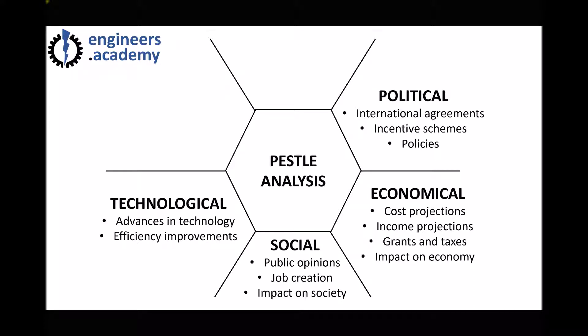The T in PESL stands for technological. Things likely to impact a renewable energy development include advances in technology. For example, until recently all wind turbines needed a gearbox, but more recently wind turbines are being developed as direct drive, meaning they don't require a gearbox. This has led to a reduction in maintenance required and, as a result, the costs of downtime have been reduced. That's an example of how technological developments might influence the outcome of a project.